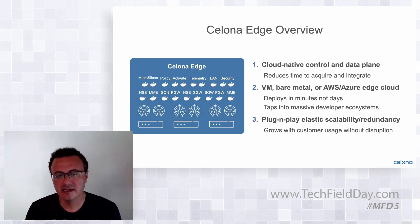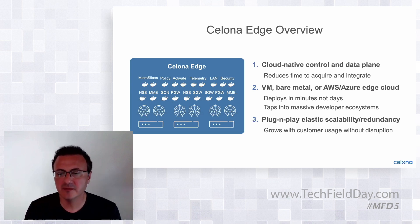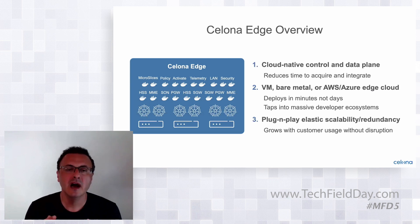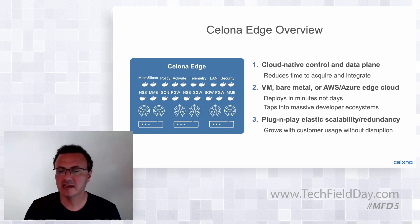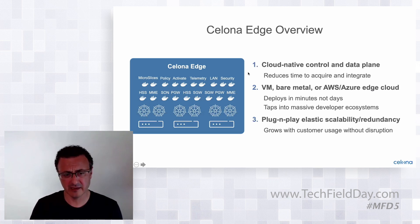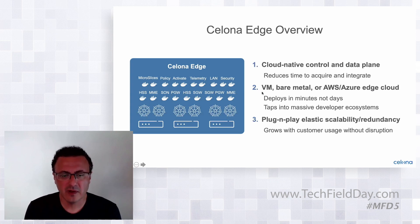SIM identity on the devices are assigned to specific roles within the network via existing AAA and policy infrastructure. The traffic flow within the L2/L3 switching and routing infrastructure takes place just like it does for existing Wi-Fi and internet-connected devices.